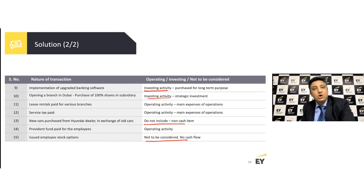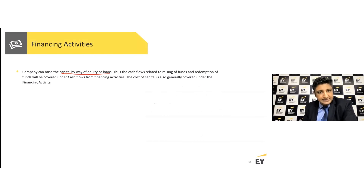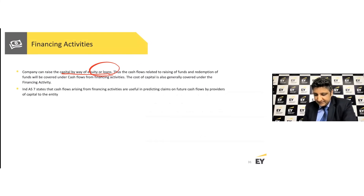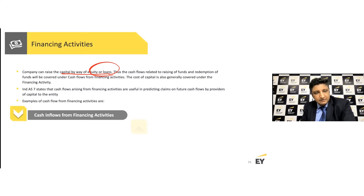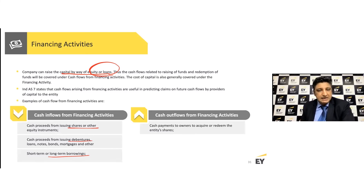For financing activities, you can create wealth by raising money through equity — preference shares, equity shares, share premium — or by borrowing from a bank via a long-term loan. These are all part of financing activities. Any repayments, dividends paid back to shareholders, or interest paid on loans are also examples of financing activities. Basic inflow examples include: issue of shares, debentures, long-term borrowings, or short-term borrowings that do not fall under operations.